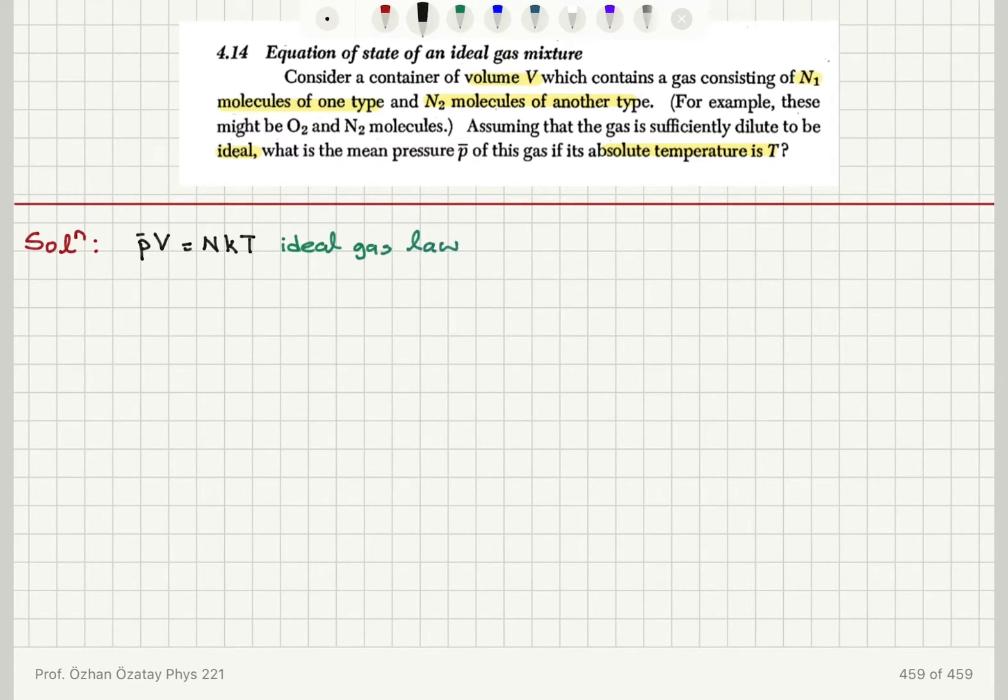For these different types of gas molecules, I can write the ideal gas law because they are behaving as ideal gases. So P̄₁V = N₁kT because it fills the full volume of the container. The partial pressure of gas type 1 is P̄₁ = N₁kT/V.